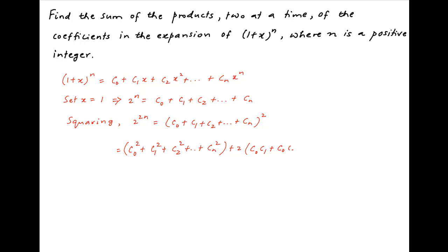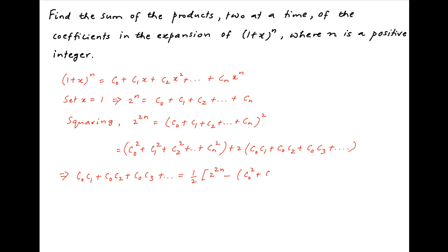Therefore, the sum of the products of the coefficients taken two at a time — which is C0·C1 + C0·C2 + C0·C3 + ... — is equal to half of [2^(2n) minus (C0² + C1² + C2² + ... + Cn²)]. Let's call this Result 1.